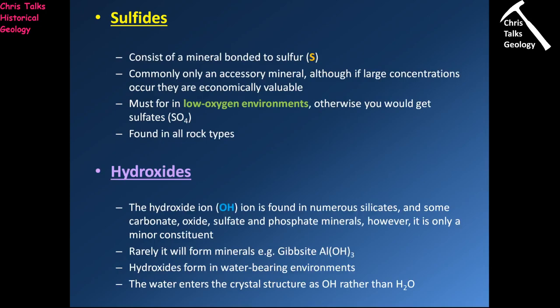Sulfides — metals bonded just to sulfur — are also common accessory minerals, but like the oxides, they are very economically valuable when concentrated. The primary ore minerals for copper, zinc, lead and other metals are sulfides. They must form in low-oxygen environments because if oxygen is present, sulfur will naturally react with it and produce a sulfate instead. The presence of sulfides in a rock therefore indicates that the oxygen level was quite low.